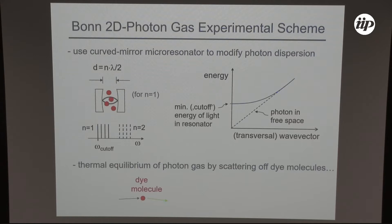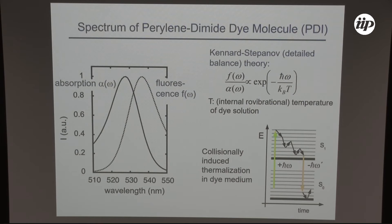We thermalize the light by filling dye molecules in liquid solution into our resonator, and we obtain thermal equilibrium by repeated absorption and re-emission events on these dye molecules. These are typical spectra of dye molecules we use — for example perylene diimide. You see both the absorption and fluorescence spectrum, with the Stokes shift in between. This can be described by the so-called Kennard-Stepanov theory, which is related to detailed balance. It says that the ratio of the frequency-dependent fluorescence divided by the absorption has a Boltzmann-like scaling: e to the minus ℏω, the photon energy, divided by k_B T, the thermal energy.